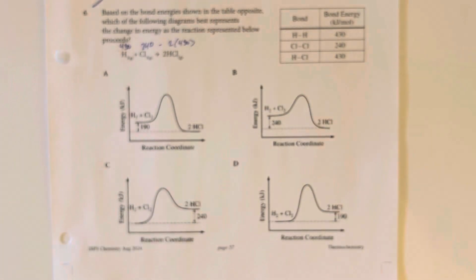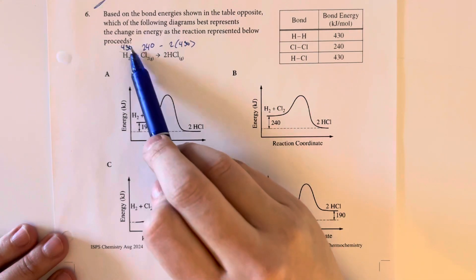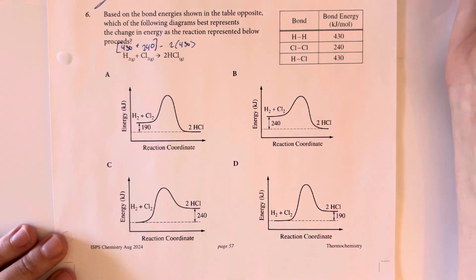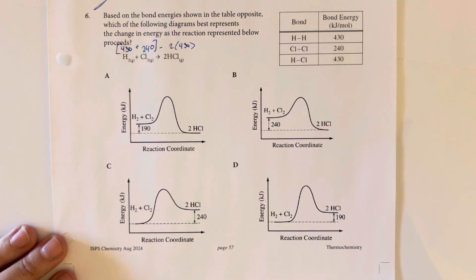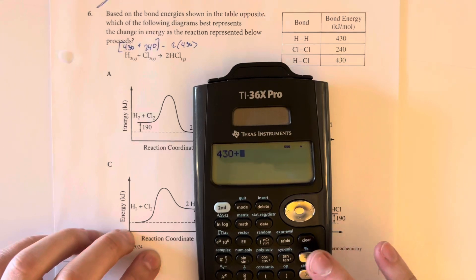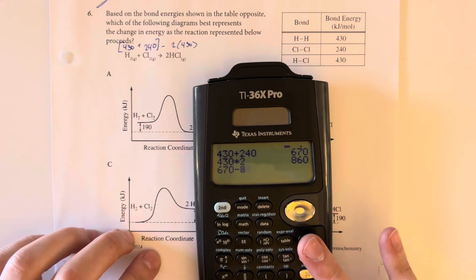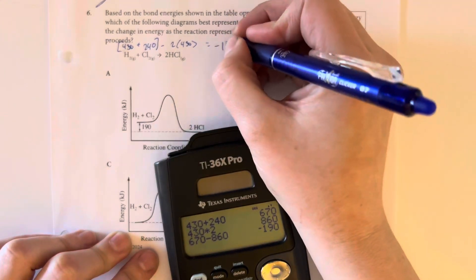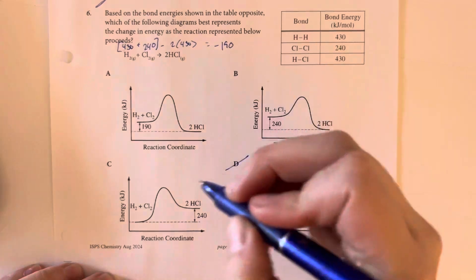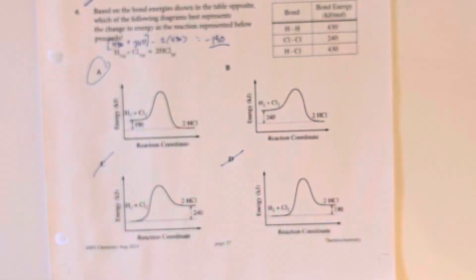Our overall amount of bond energy is going to be higher in my reactants. Or I should say that my delta H is going to be negative here. So we have 430 plus 240, and then 430 times two. So 670 minus 860 gives me negative 190. So that means I have released 190, and I'm going to be lower on my product side. So I'm going to eliminate anything that has me higher on my product side. And then my differential was 190. So that would be answer choice A.